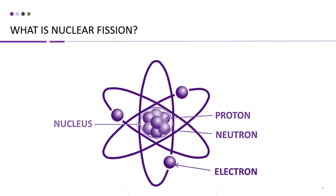Nuclear fission is the process of splitting the nucleus of an atom into two or more smaller nuclei, along with the release of an immense amount of energy. This process is at the heart of how nuclear reactors generate electricity. But how does it work? Let's dive into the details.